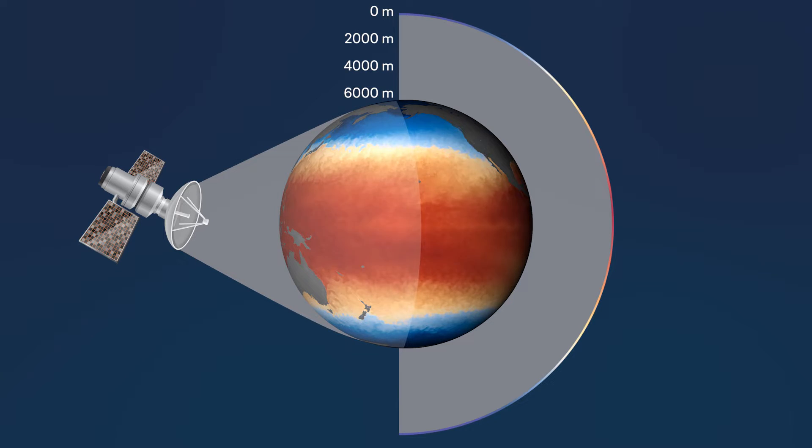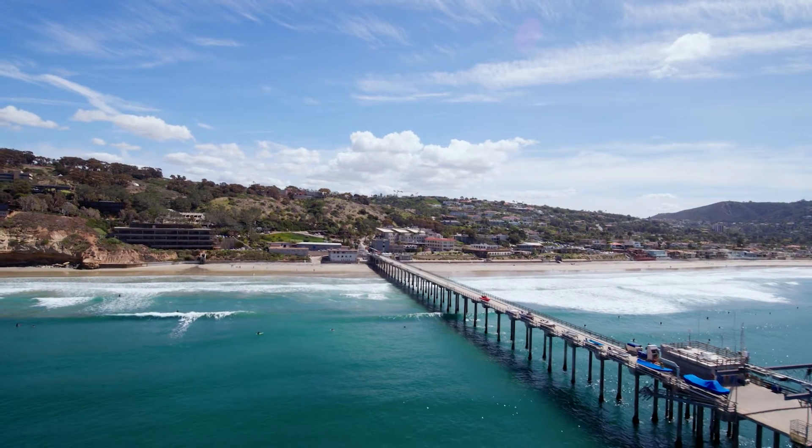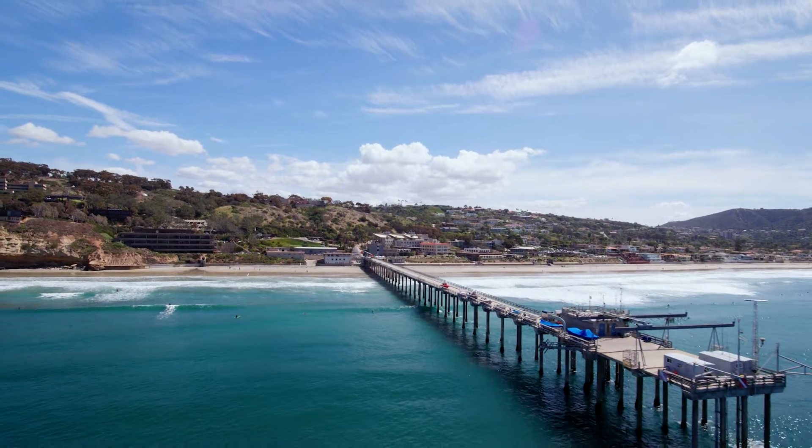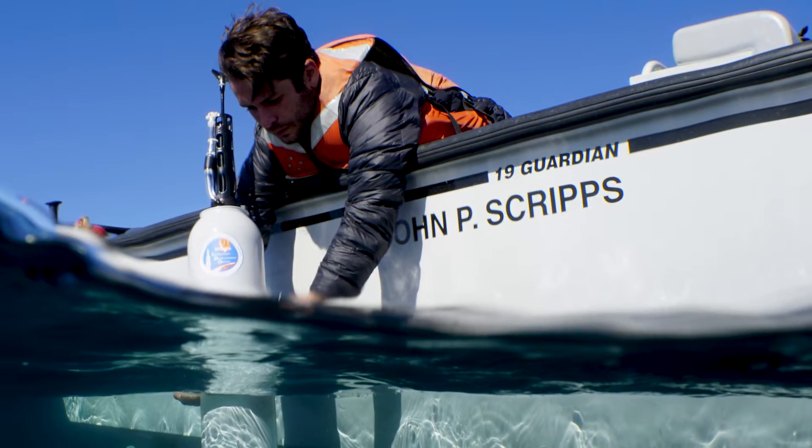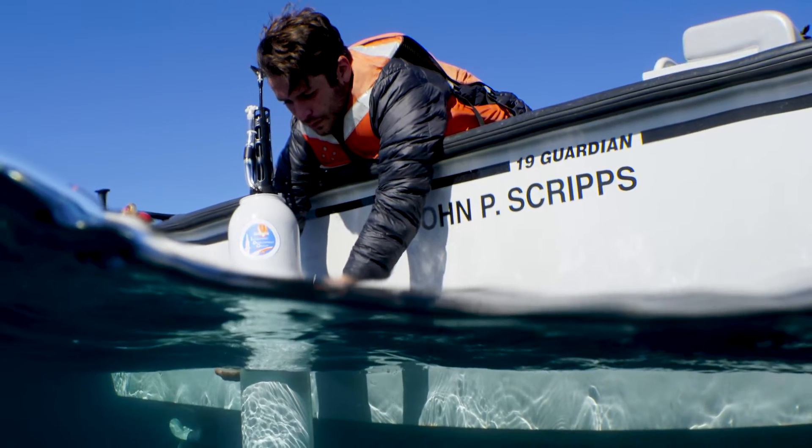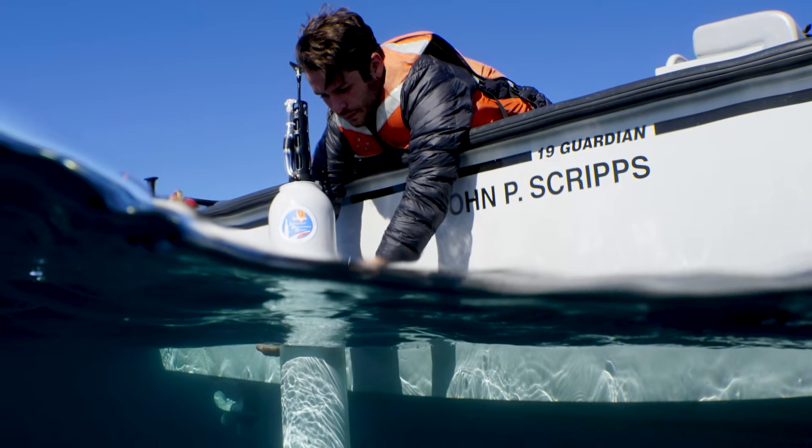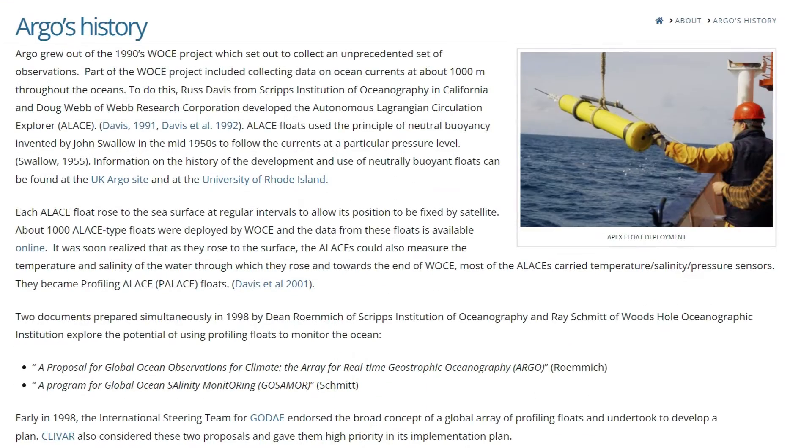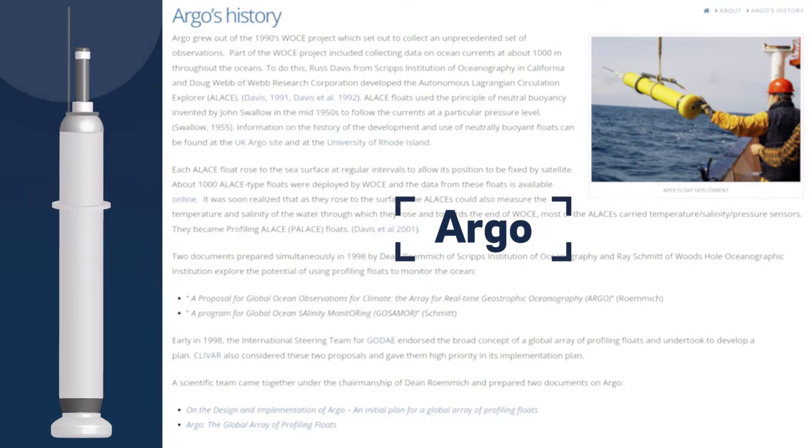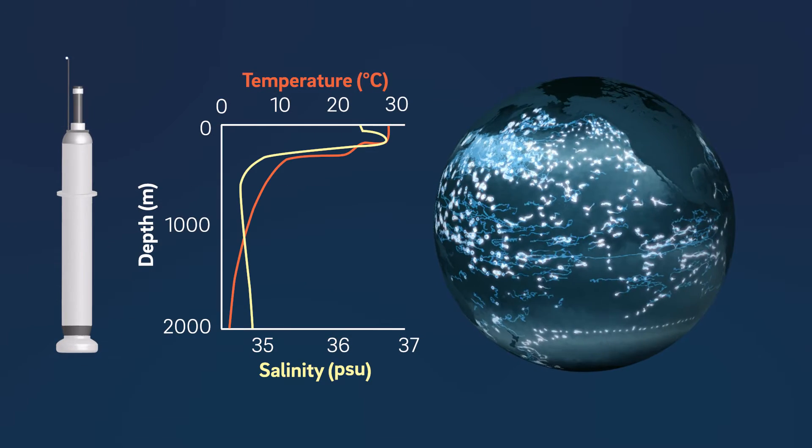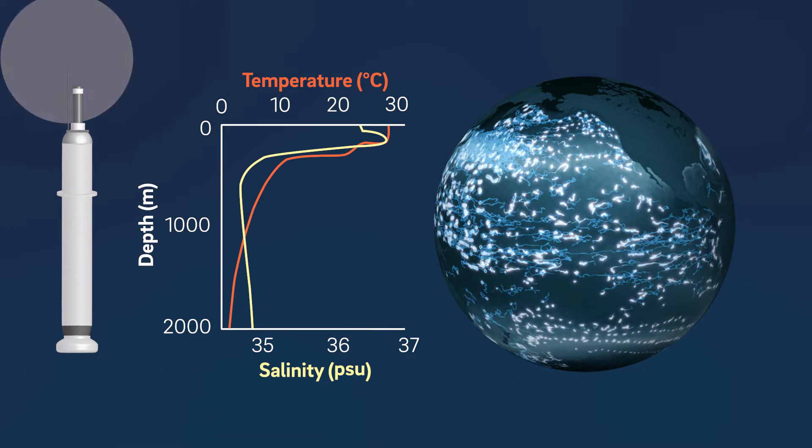To understand the full extent of ocean warming, we need to go much deeper. In the 1990s, UC San Diego's Scripps Institution of Oceanography co-led the creation of an international program to deploy autonomous profiling robots across the global ocean. The program, called Argo, collects real-time temperature and salinity measurements up to 2,000 meters deep.